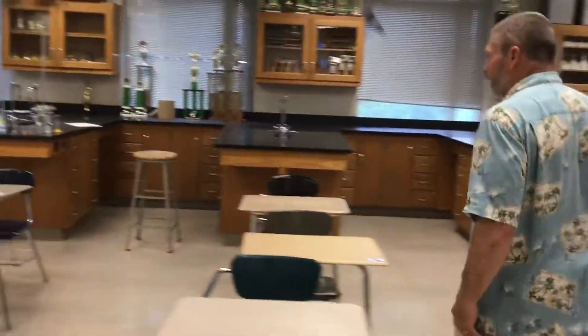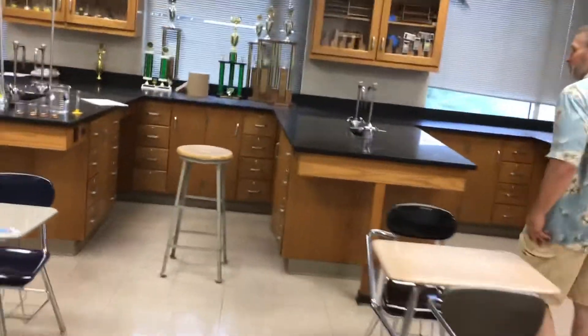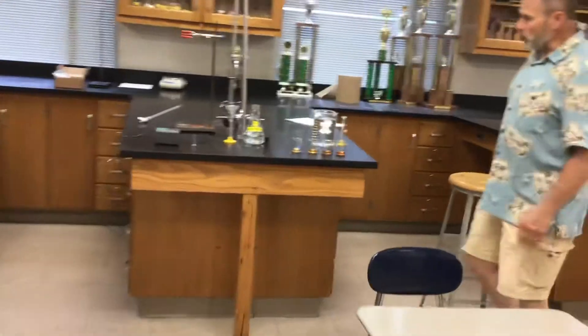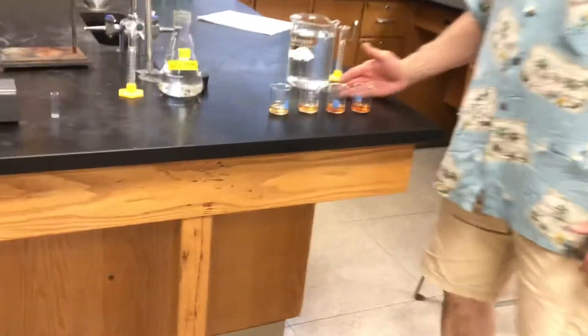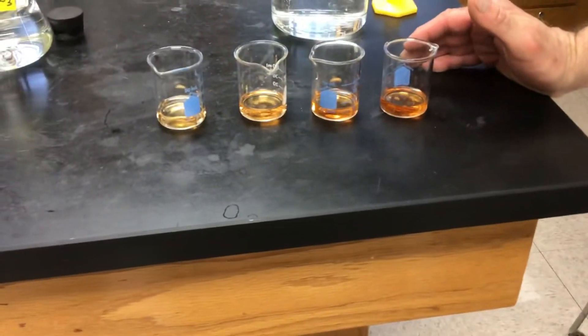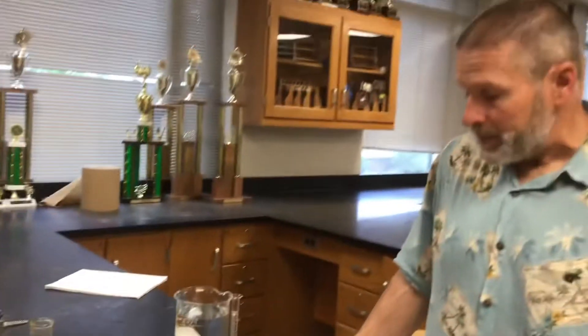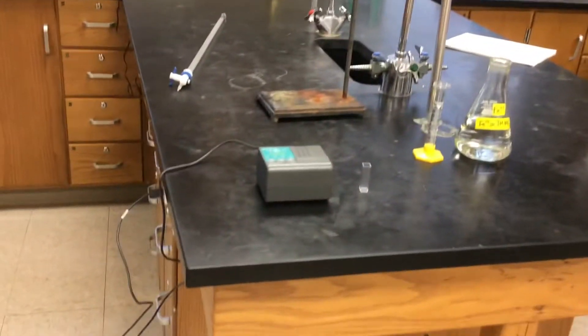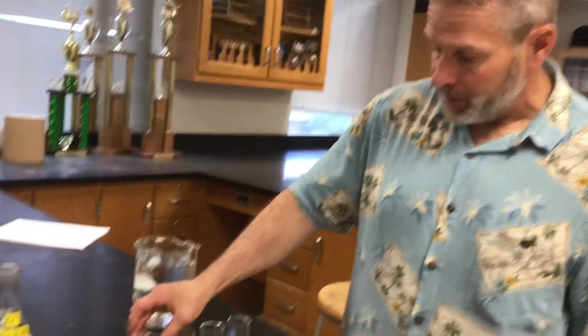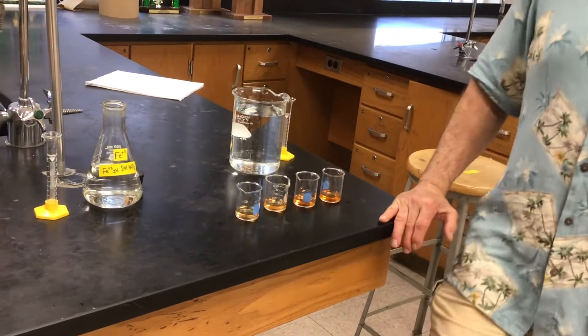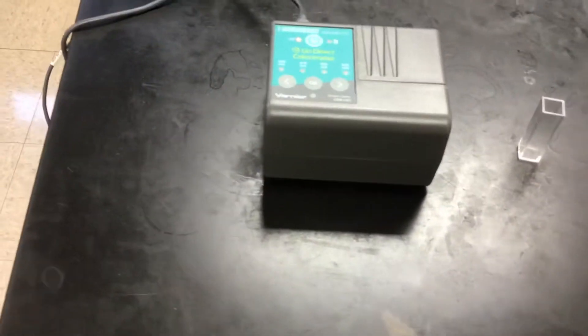So we've already mixed the solutions together. And so we're going to run four trials here. And the goal is to use our little spectrophotometer to measure the absorbance of these so we can get the concentration of the FeSCN^2+ that's in there. That's what's giving it that brownish red tinge.